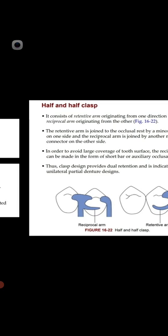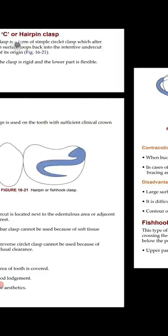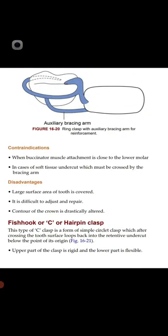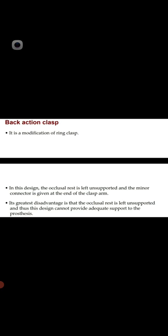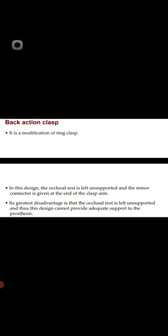The tenth type is the back action clasp — a modification of the ring clasp. In this design, the occlusal rest is left unsupported and the minor connector is given at the end of the clasp arm. Its greatest disadvantage is that the occlusal rest is unsupported, so this design cannot provide adequate support to the prosthesis.